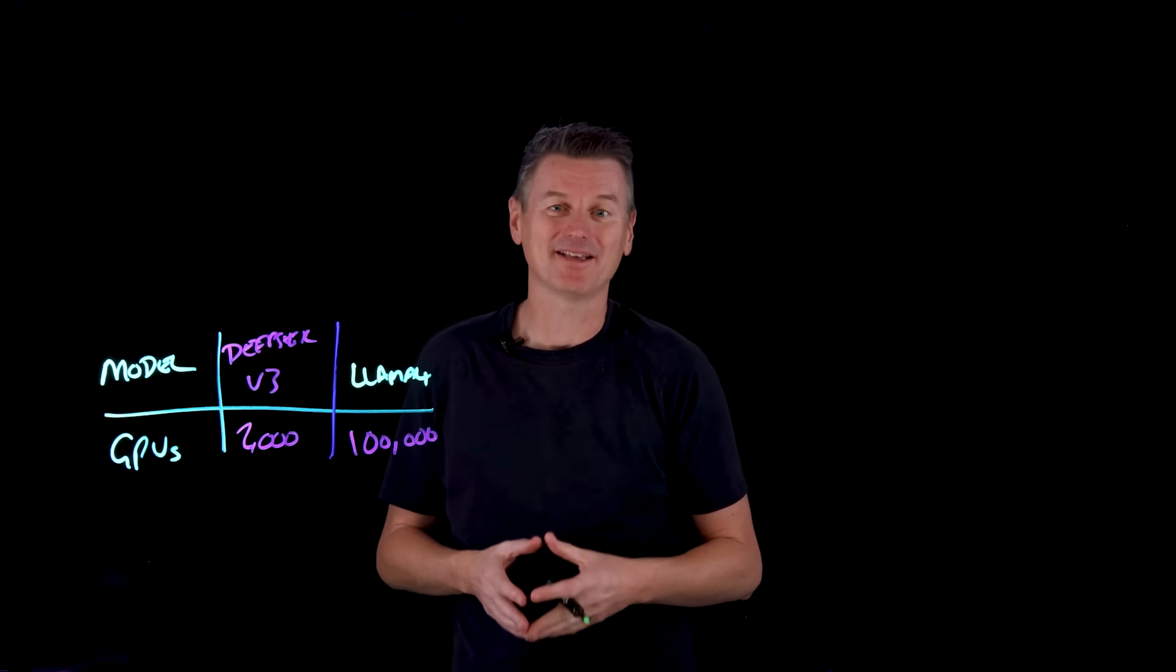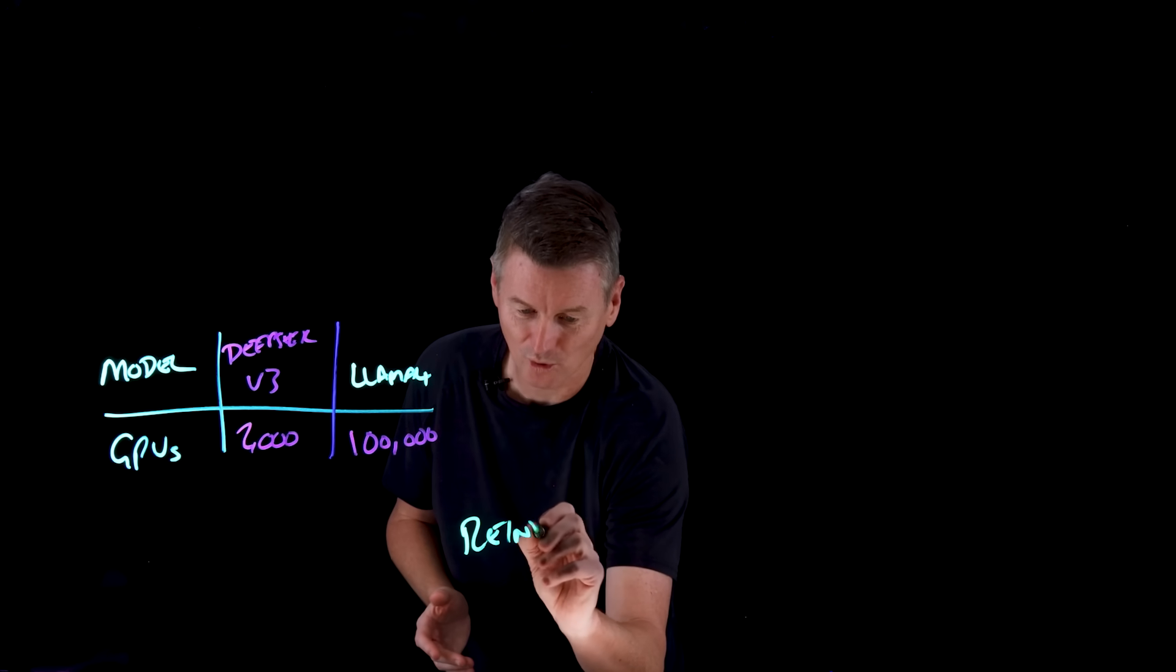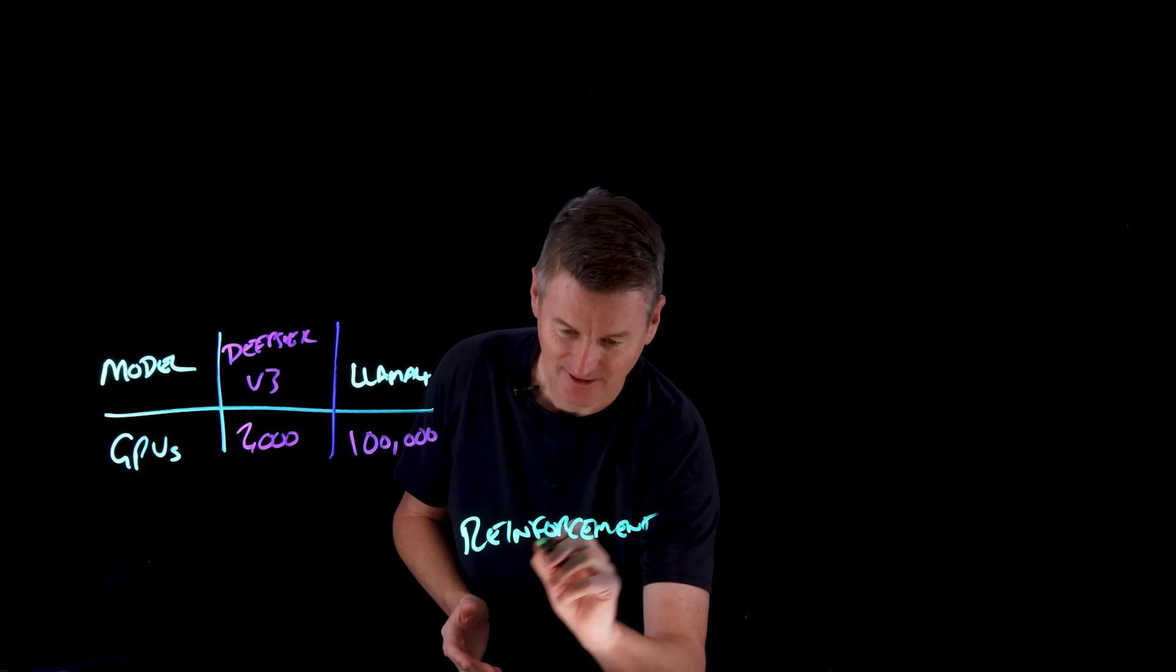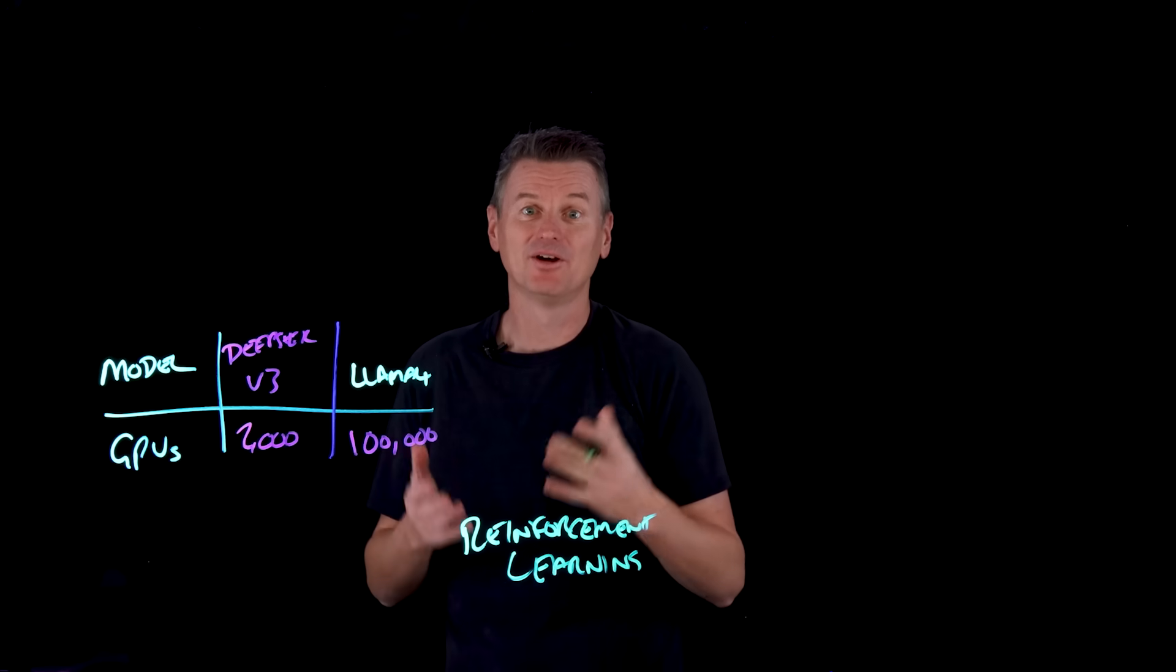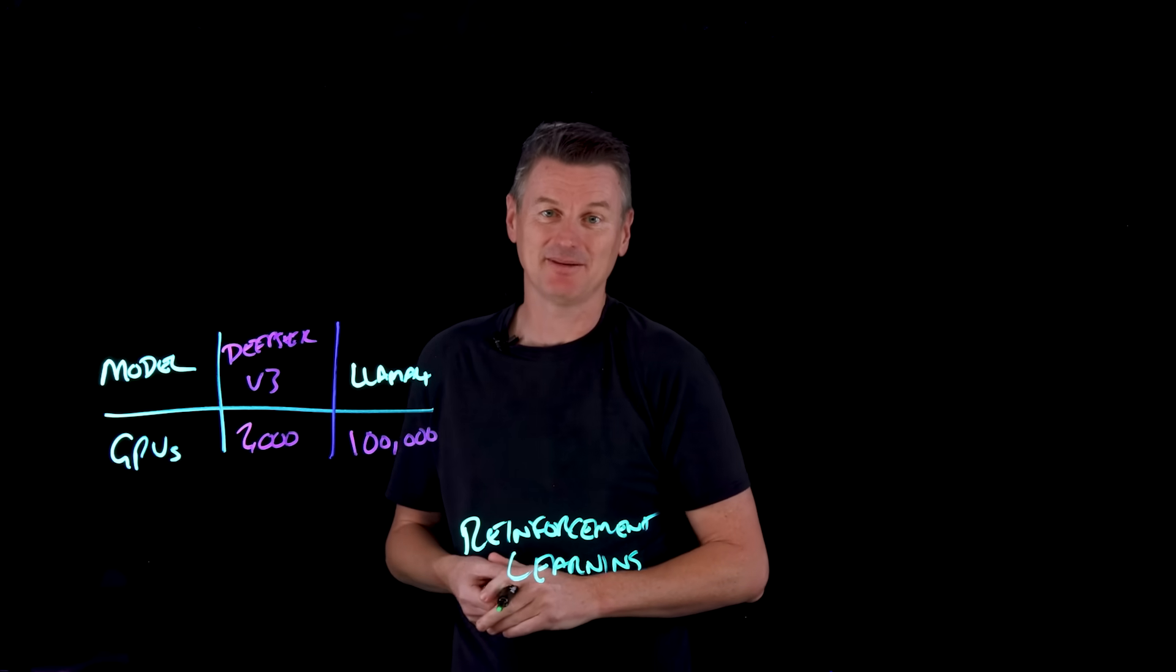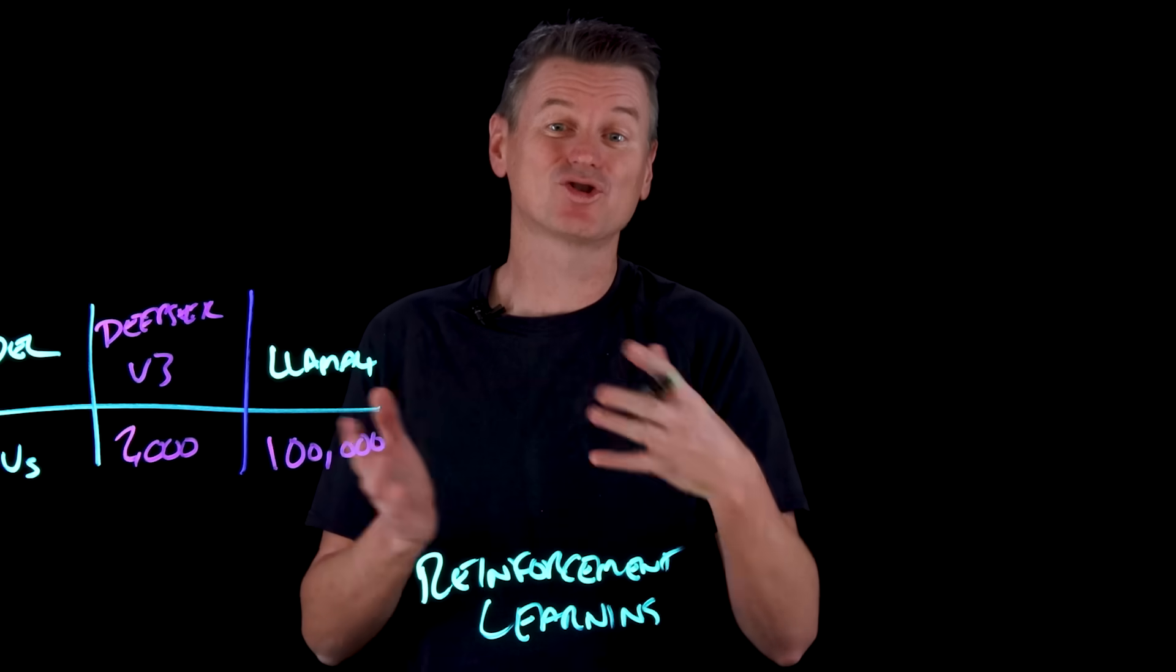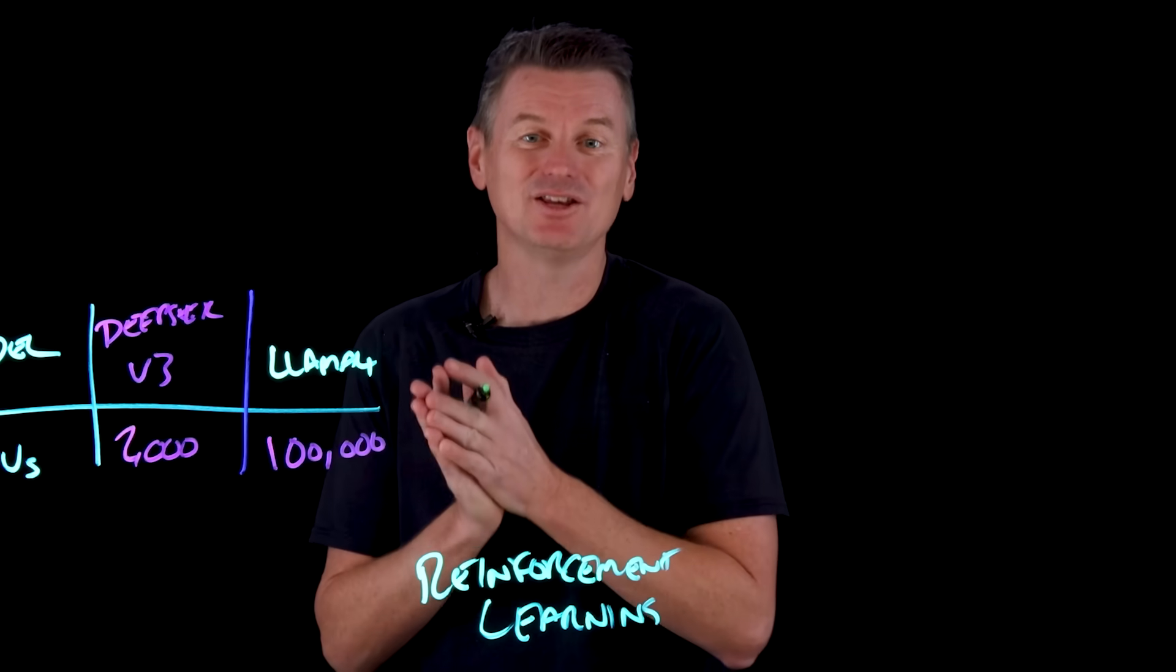Well, DeepSeek R1 combines chain of thought reasoning with a process called reinforcement learning. This is a capability that Aaron mentioned just now, which arrived with the V3 model of DeepSeek. And here, an autonomous agent learns to perform a task through trial and error without any instructions from a human user.